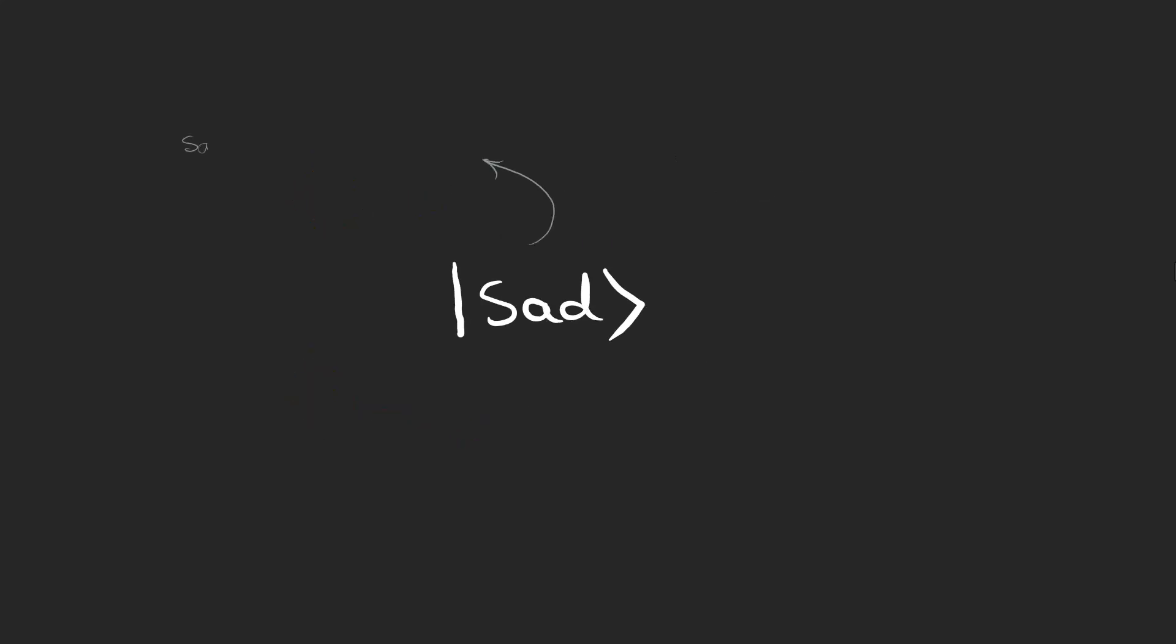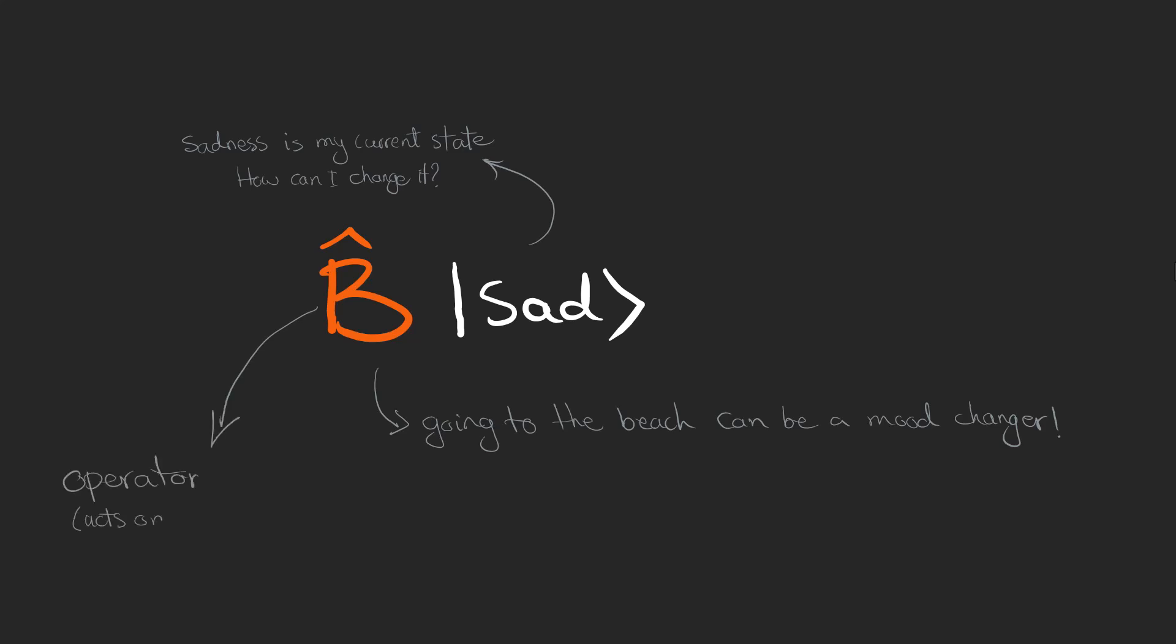Now let's consider you are sad and want to change your mood. But how can I change it? One of the options can be going to the beach, lying on the ground and listening to pounding of the waves. It can really be a mood changer. This action, which we'll call an operator later, acts on states and changes them. So here we have a new emotional state.